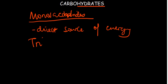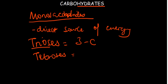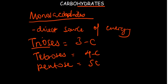Monosaccharides are identified according to the number of carbon atoms they have. Trioses have three carbons, tetroses have four carbons, pentoses have five carbon atoms, and hexoses have six. The numbers continue — we have heptoses with seven, and so forth.